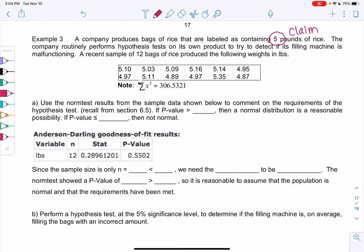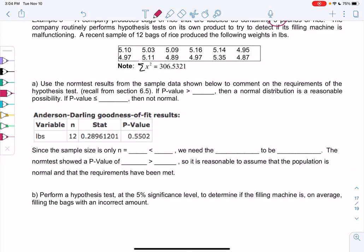Let's comment on the requirements first. Because my sample size is only 12, it's way less than 30 and way less than 15, I'm going to use the norm test from section 6.5. The norm test was actually a hypothesis test before we knew about them. If the p-value was greater than 0.5, then normal is reasonable. Otherwise, if it's less than 0.5, it's definitely not normal.